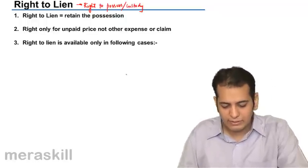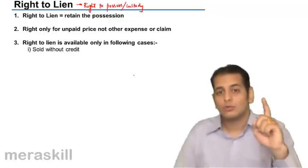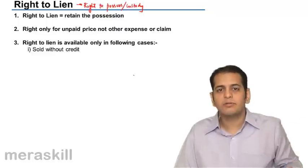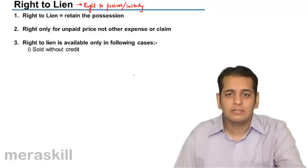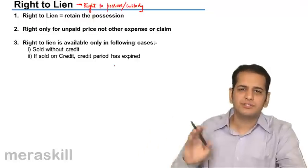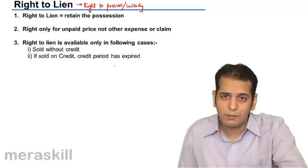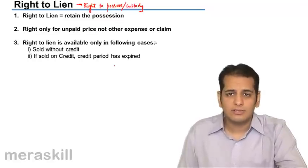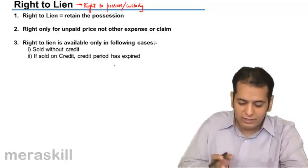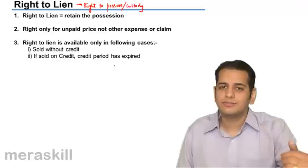The right to lien is available only in the following cases. First, if the goods are sold without credit and the price has not been paid, the seller can exercise the right of lien. Even if goods are sold on credit, the credit period must have expired. If the credit period hasn't expired, the seller is not yet an unpaid seller and will not get this right. Only when the credit period has expired and the buyer has not made the payment does he become an unpaid seller and can exercise the right of lien.